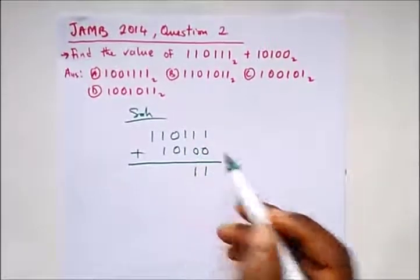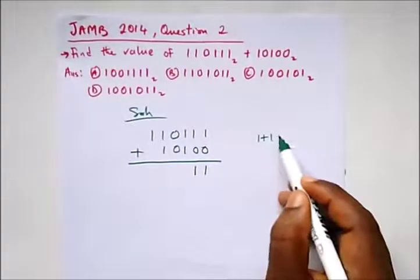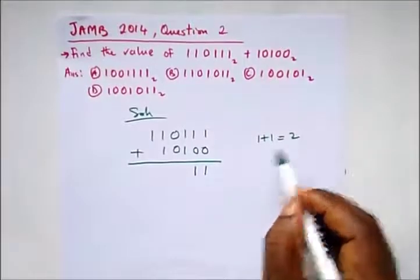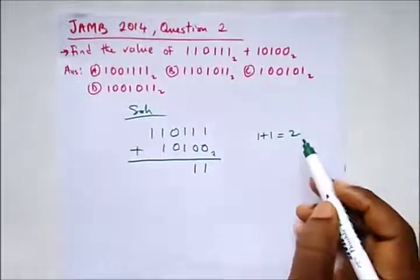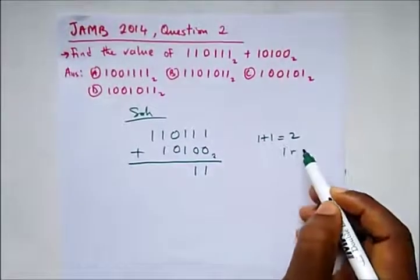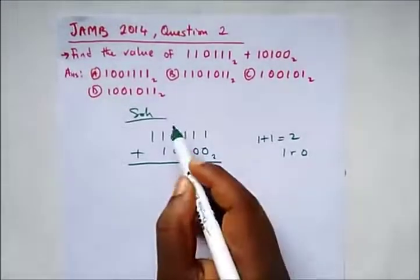This is 1 plus 1, which is 2. So 1 plus 1 is 2. We're adding in base 2. How many times would 2 go in 2? 1, remainder 0. So we write a 0 here and carry our 1.